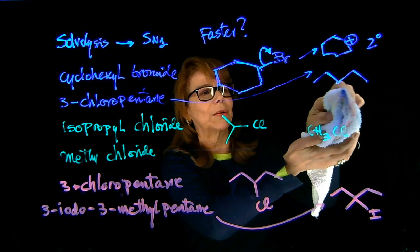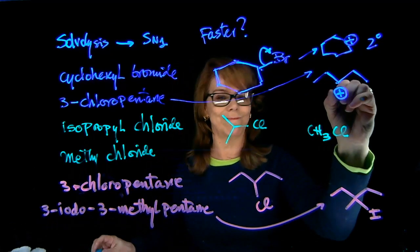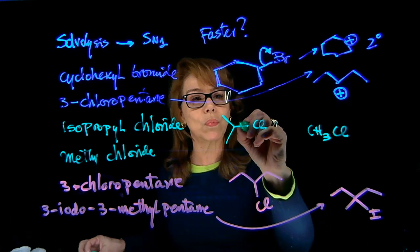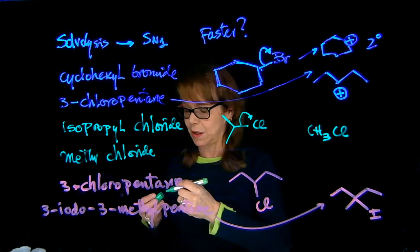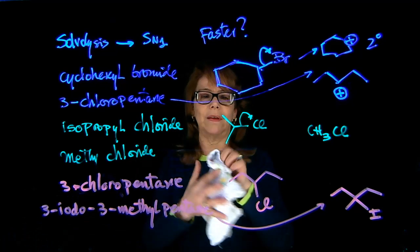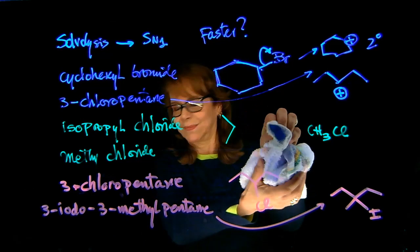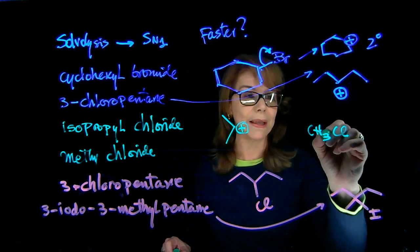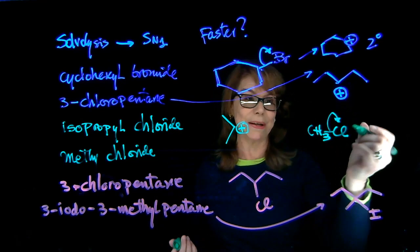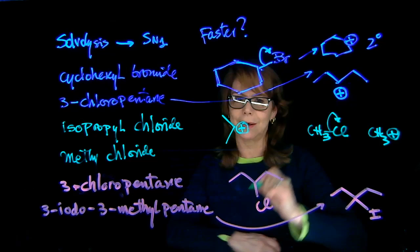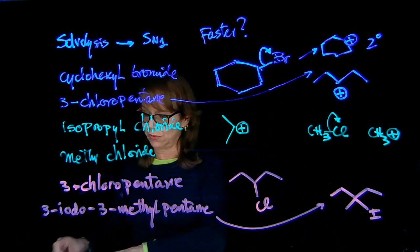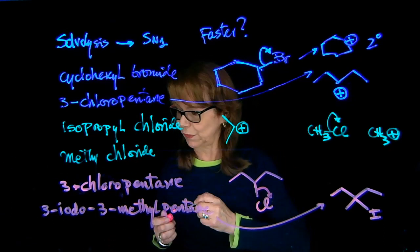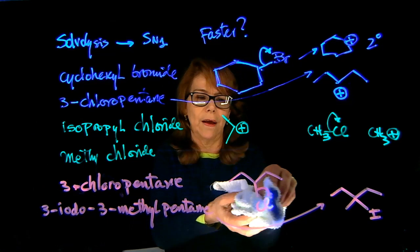From 3-chloropentane: removing chlorine gives you this carbocation structure. For isopropyl chloride, chlorine departs as chloride and we have the resulting carbocation. Same process for methyl chloride, forming its carbocation. Then for 3-methylpentane and 3-iodo-3-methylpentane: loss of the leaving group gives the following carbocation in each case.